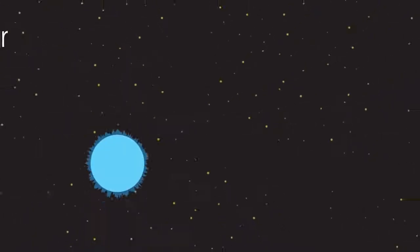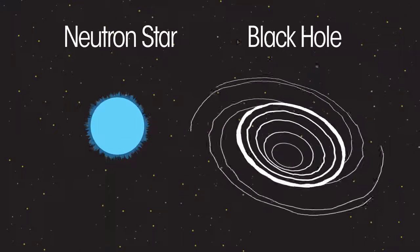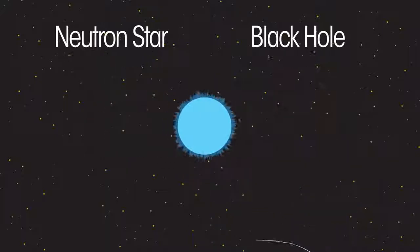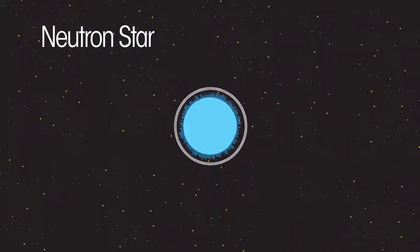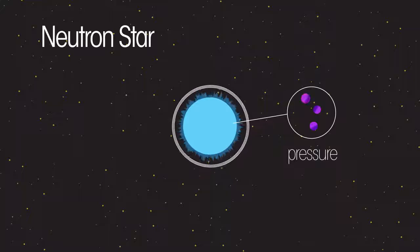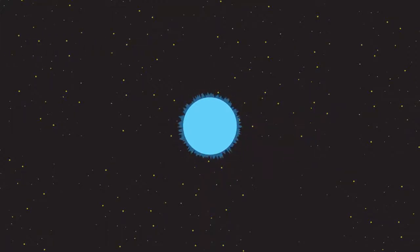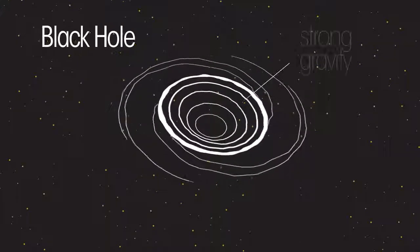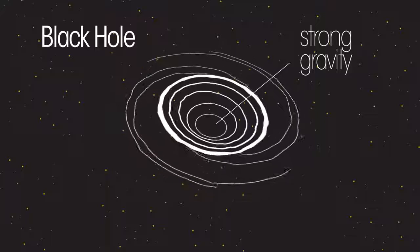One of two things can happen next. Either a neutron star or a black hole is formed. A neutron star is made of densely packed neutrons, formed when under immense pressure electrons are forced to merge with protons. A black hole is formed if the mass of the neutron star is sufficiently high to cause further gravitational collapse. A black hole has such strong gravity that even light cannot escape it.